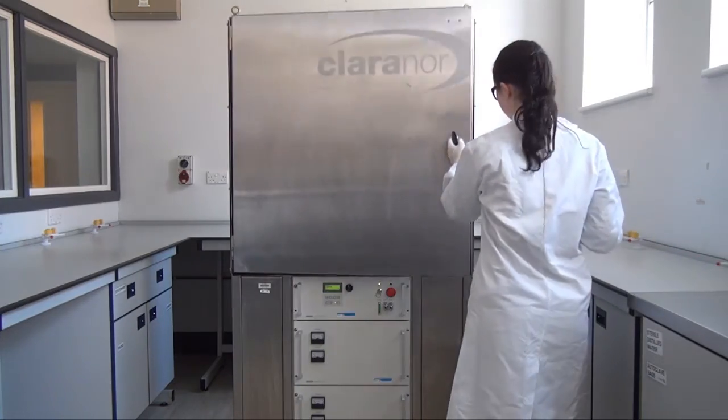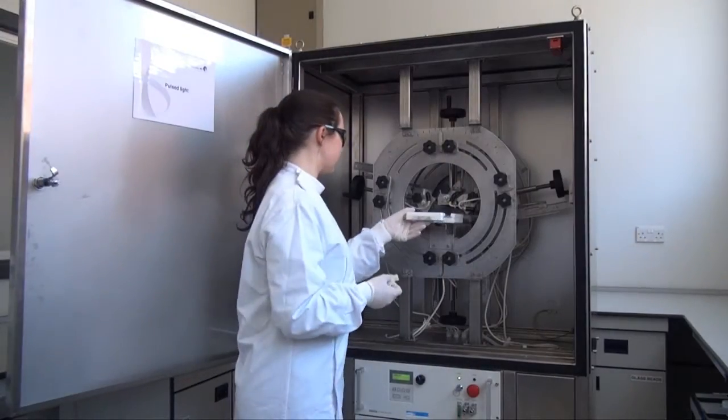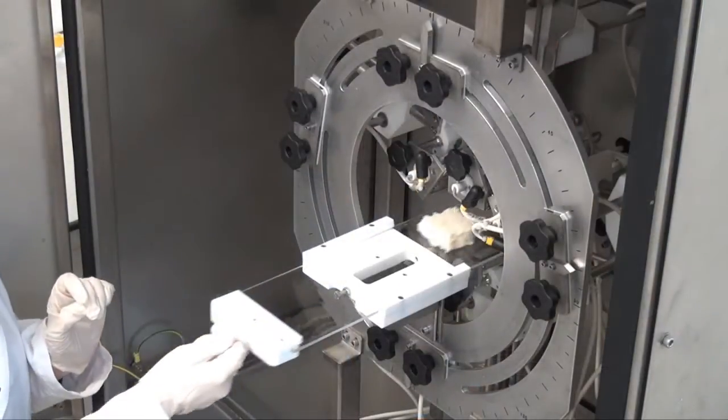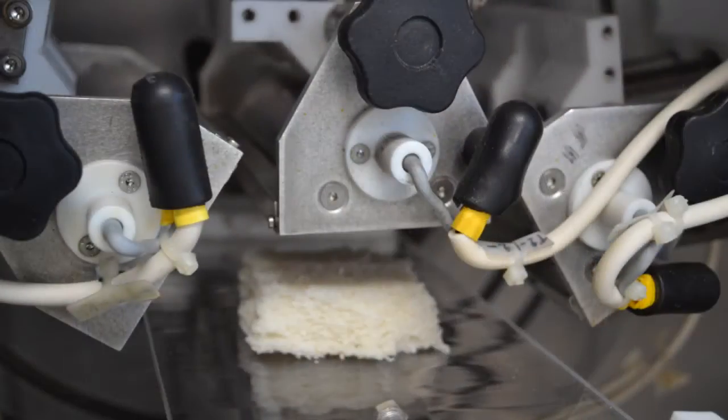A food sample is loaded into the treatment chamber to sit on a quartz UV transparent sample platform. The sample is surrounded by lamps.